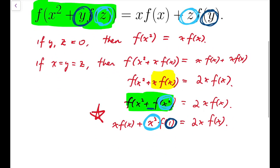So now from after this step, this magical step, we can have x squared times f of 1 equals x times f of x.